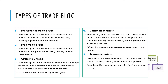The final type is an economic union, which takes a common market further by having some common economic policies on government spending or taxation, and sometimes this involves a common currency — a monetary union. So the five types range from low integration, where barriers are removed on particular goods, all the way up to full integration with the same currency and economic policies.